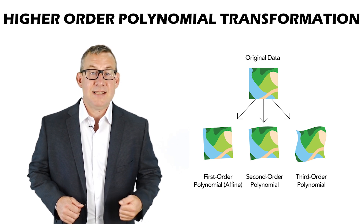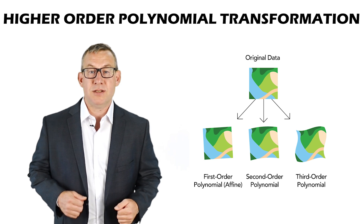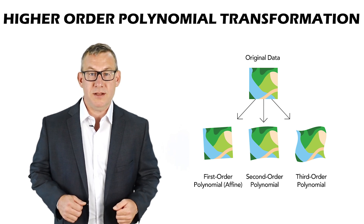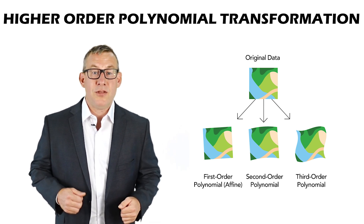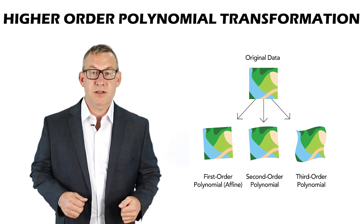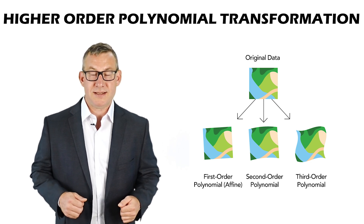Second-order polynomial transformations require six control points. Third-order polynomial transformations require ten control points.